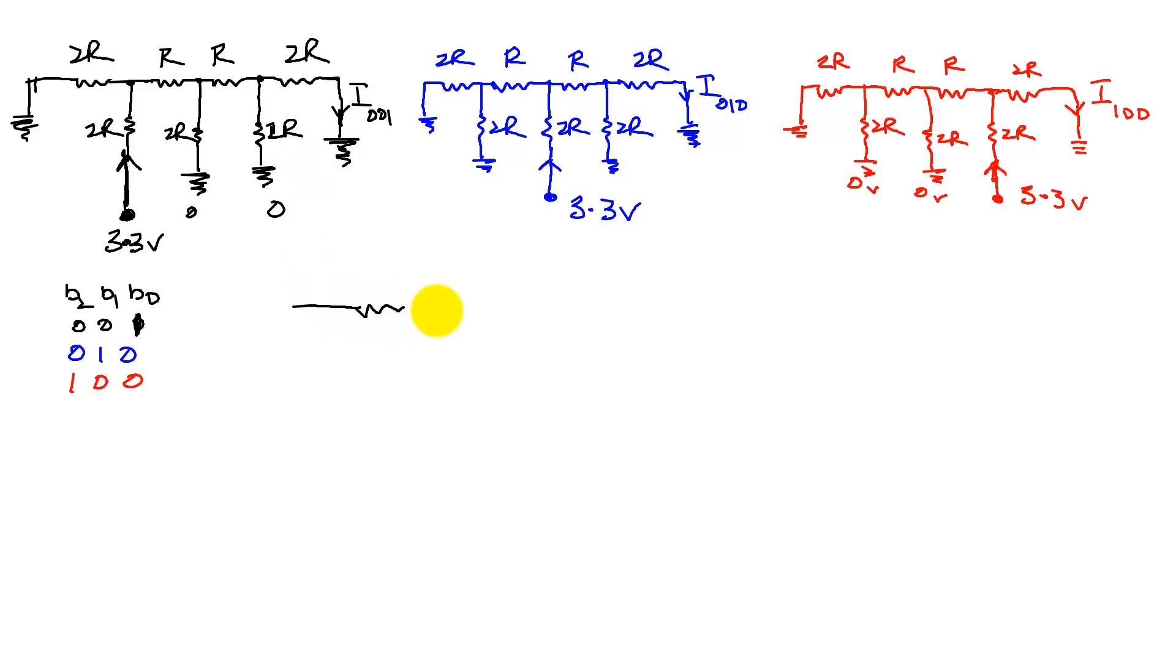That is, we will have a signal that is 3.3 volts with a 2R and an R.